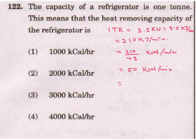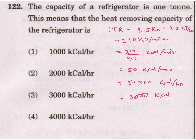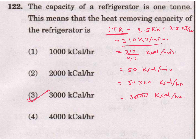Converting to per hour: 50 kcal per minute multiplied by 60 gives 3000 kcal per hour. Many times they ask about 1 ton of refrigeration — you have to convert it into kilo joules per minute, or kilocalories per minute, or kilocalories per hour. All these units are very important to know.